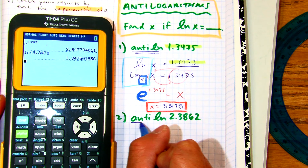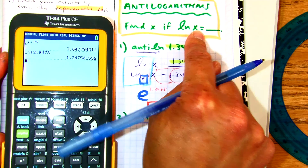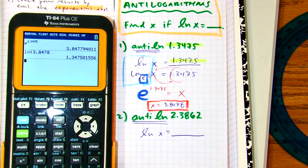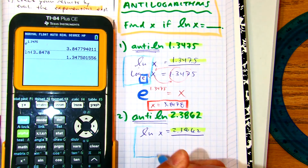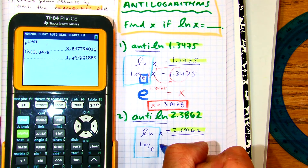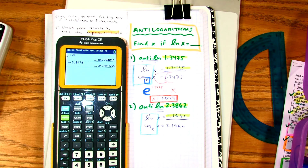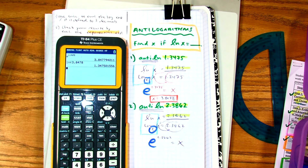Let's try another one. Partner B, tell partner A — what do we write when we see anti-natural log? Put your finger in the orange box. What are we writing? LN of x equals blank. Put your finger on what goes in the blank. Class, what's a natural log? Log base e. Class, what's my base? What do I do with those numbers? And there's our calculator-ready equation.